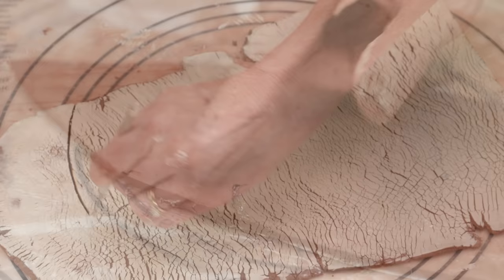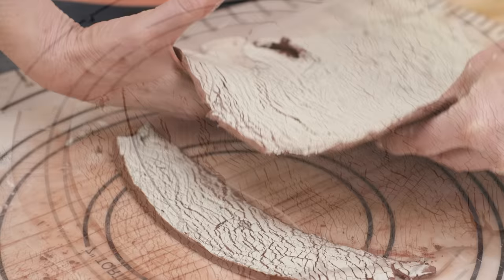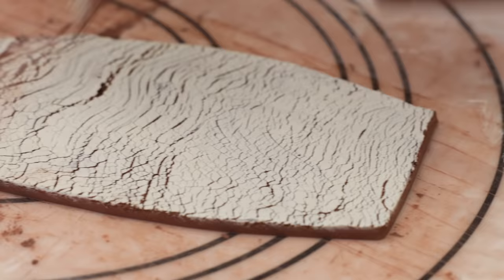I repeated the same process for the second template piece. Finally for the bottom, I thought I'd just cut out a plain red slab.